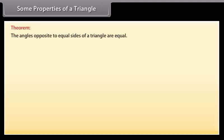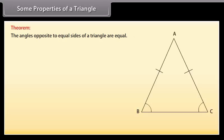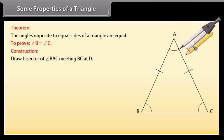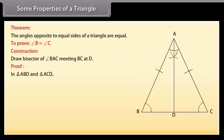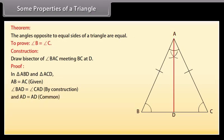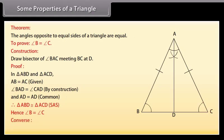Theorem: The angles opposite to equal sides of a triangle are equal. Let's prove it. Given is a triangle ABC in which AB is equal to AC. We have to prove that angle B is equal to angle C. Construction: Draw the bisector of angle BAC meeting BC at D. Proof: In triangle ABD and triangle ACD, AB is equal to AC (given), angle BAD is equal to angle CAD (by construction), and AD is equal to AD (common). Therefore, by SAS rule, triangle ABD is congruent to triangle ACD. Hence, angle B is equal to angle C. The converse of the above theorem is also true, which says that the sides opposite to equal angles of a triangle are equal.